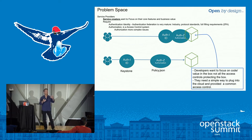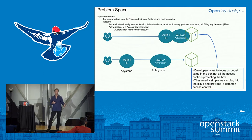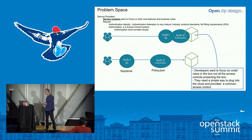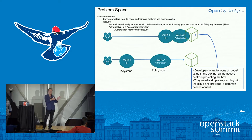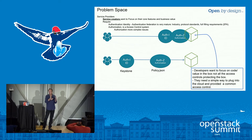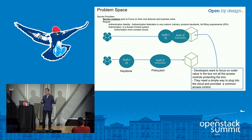Somebody comes there, we can identify them. Now that I've identified them, what are they allowed to do? That's the authorization piece. So if you can provide that in your cloud platform, then you have a way for services to just focus on whatever their core service is — again, it could be gaming, financial, research, scientific, anything like that.